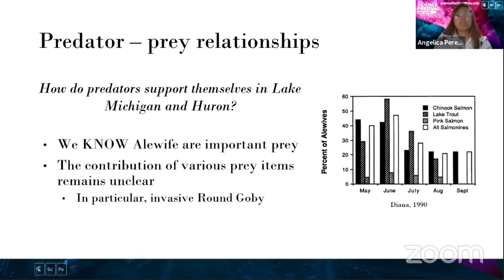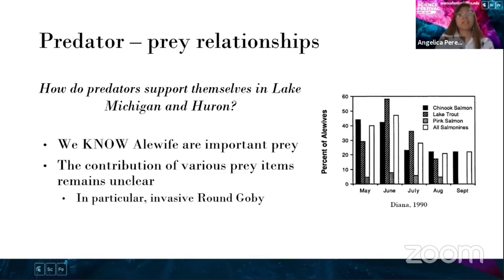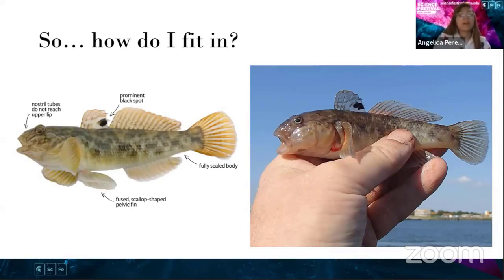So how do predators support themselves in Lake Michigan and Lake Huron? We know that alewife are an important prey item. From figures showing percentage of alewives in diets from May to September, we see that Chinook salmon and lake trout have a larger portion of their diets depending on alewives. However, the contribution of various prey items still remains unclear, particularly the round goby — which is my species of interest. My question is: how do round goby fit inside of the Great Lakes food web?